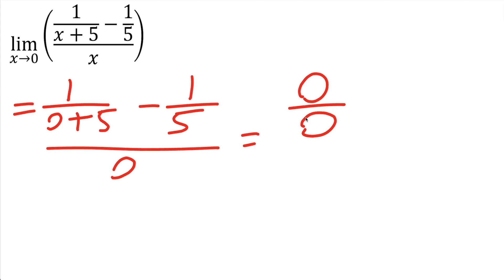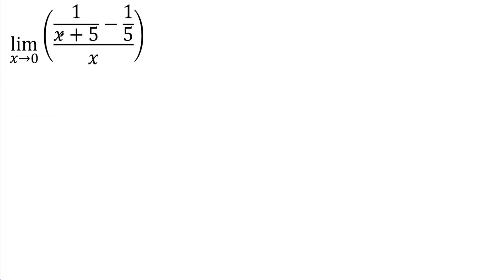I classify this problem as a common denominator problem — we need to get the common denominator for the numerator. This denominator is x plus five, and this is just a five, so the common denominator could be five times x plus five.